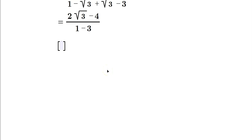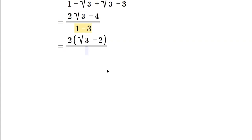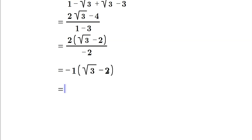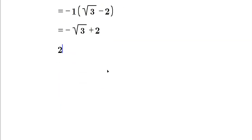Simplifying: in the numerator we have 2 root 3 minus 4. In the bottom, 1 minus 3 gives negative 2. Factor a 2 from the numerator, leaving root 3 minus 2, divided by negative 2. So 2 divided by negative 2 gives negative 1 times (root 3 minus 2). Distributing the negative and putting the positive term first gives 2 minus root 3. That's the final simplified answer.